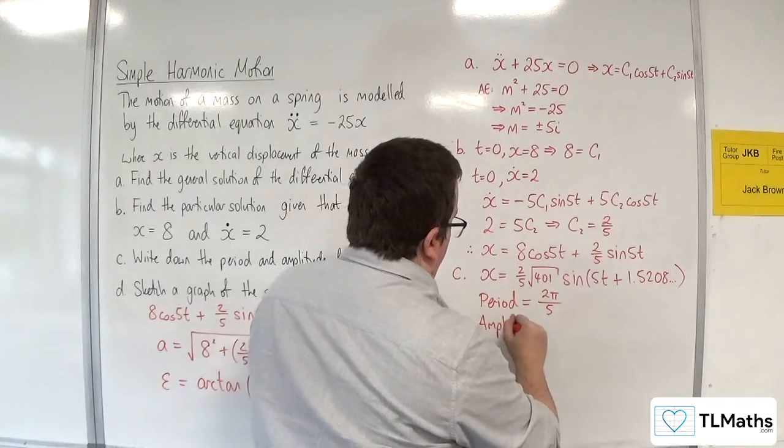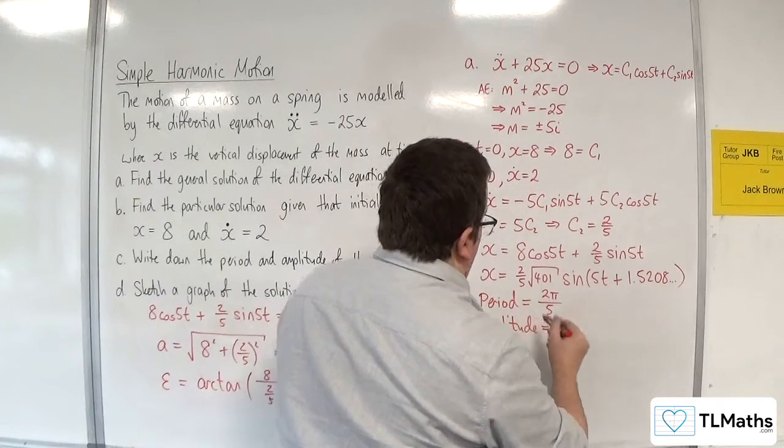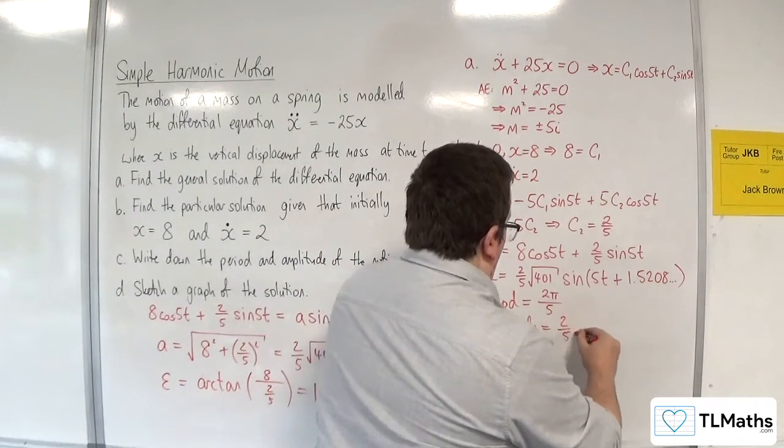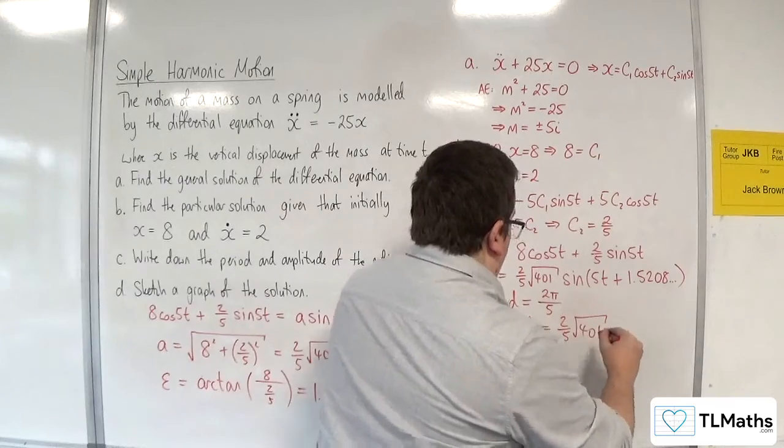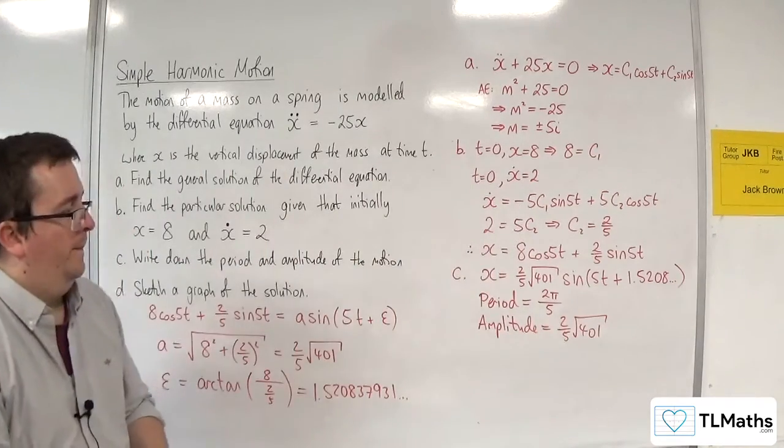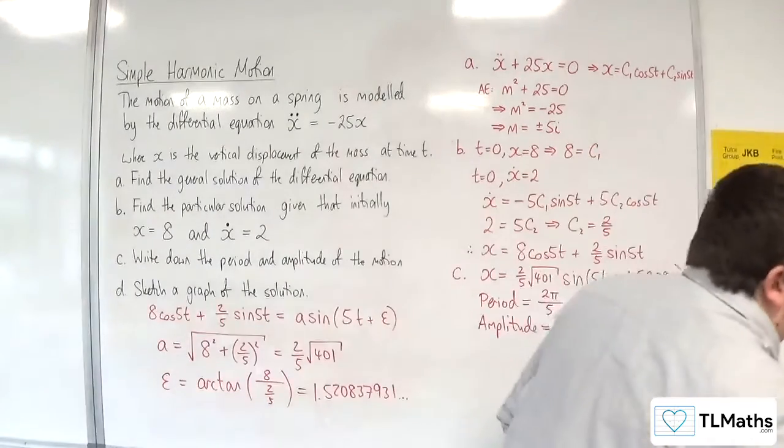And then your amplitude is the 2/5 root 401. So that's where we're at.